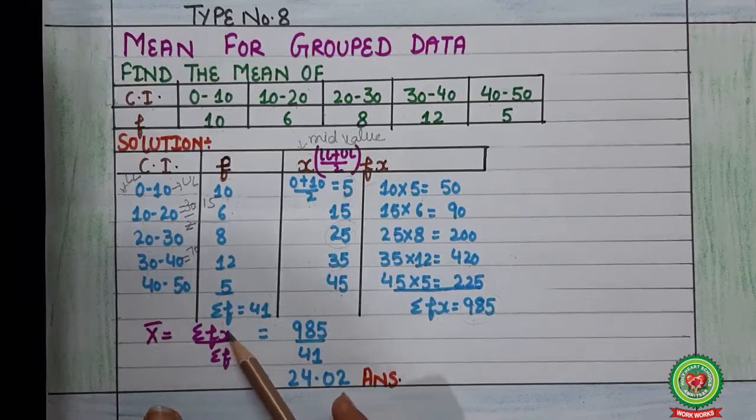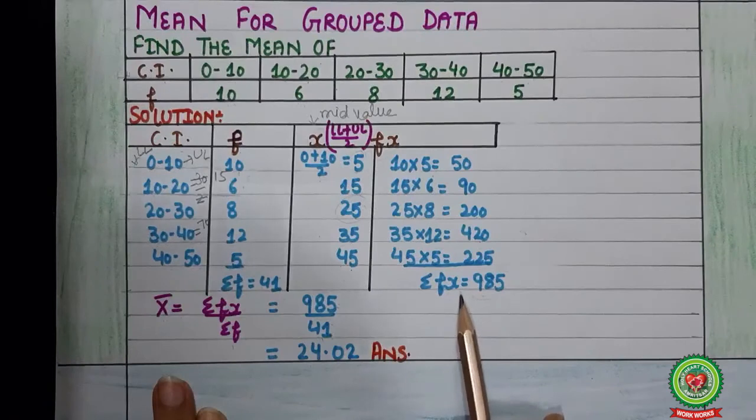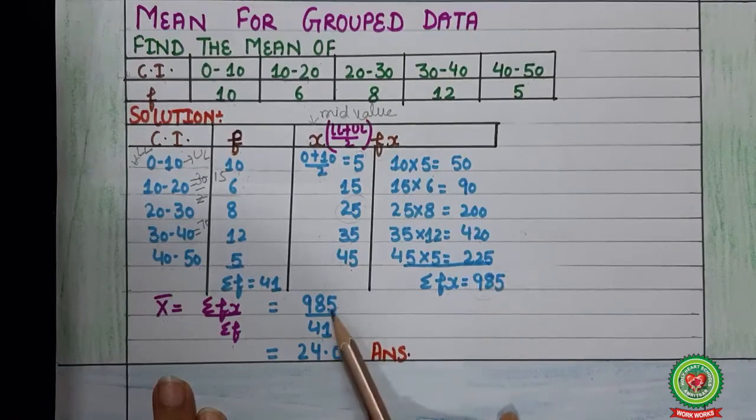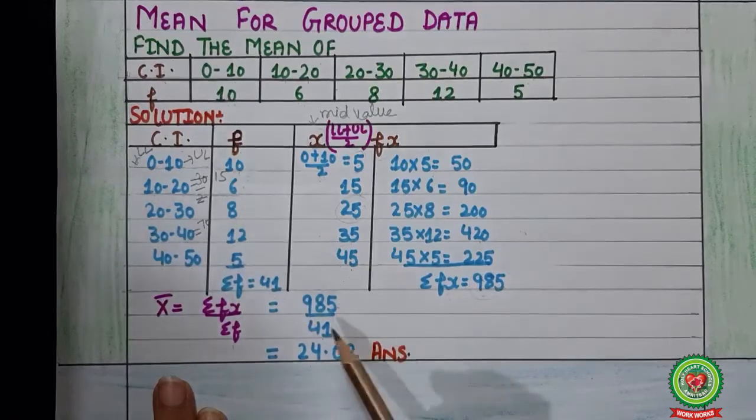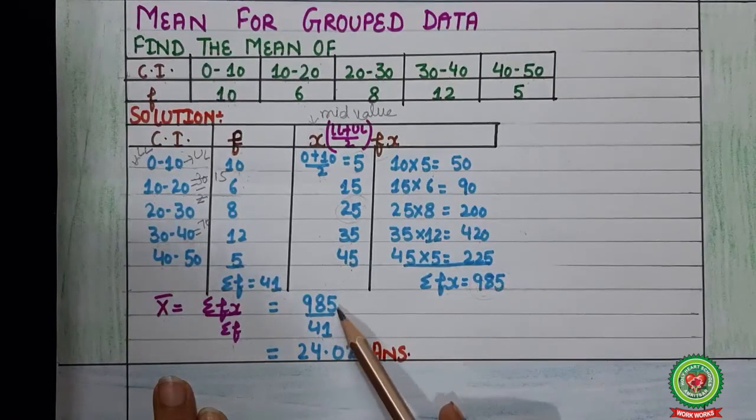Now put the values of summation fx, that is 985, and summation f, that is 41. If cutting is possible, do the cuttings, otherwise answer will come in decimal. So here our answer is 24.02.